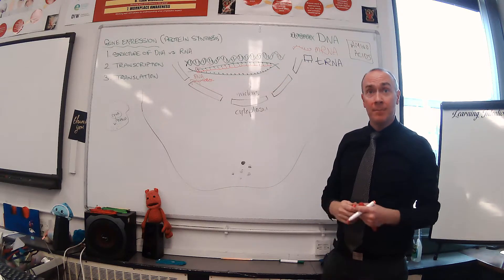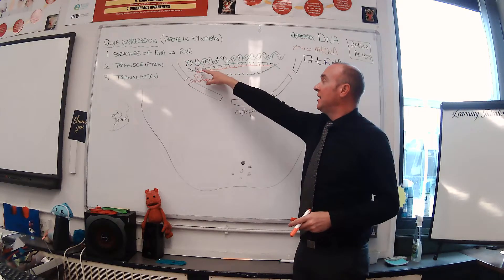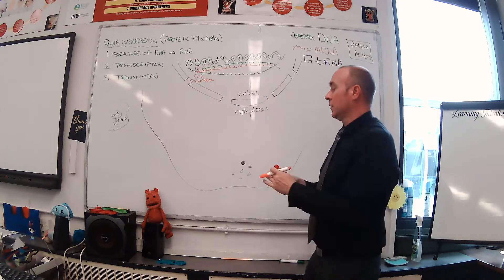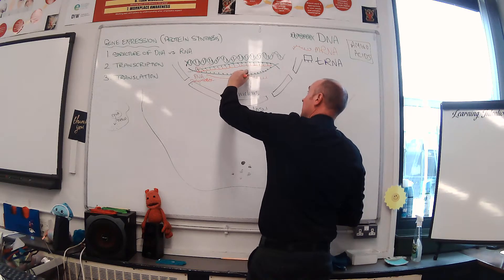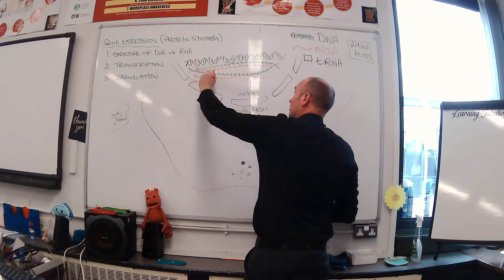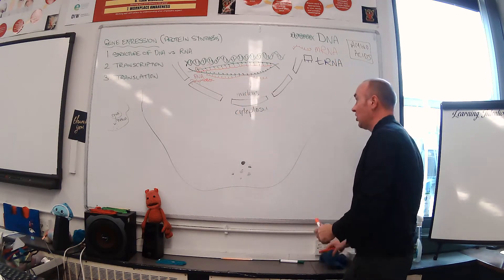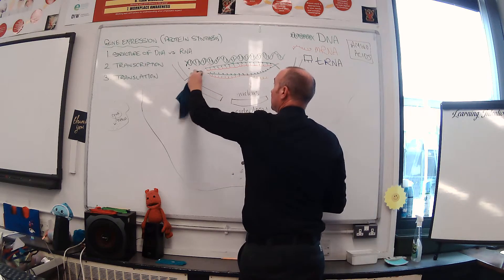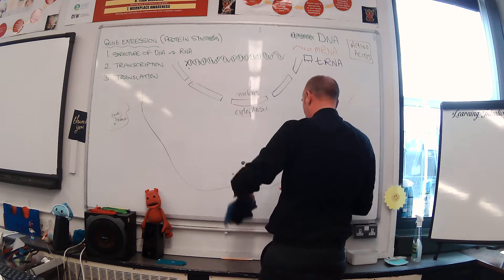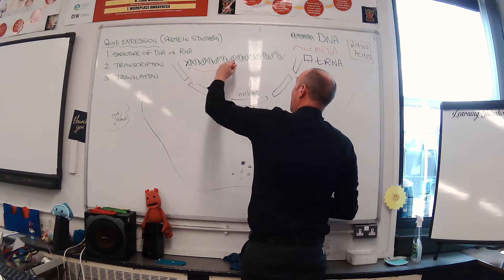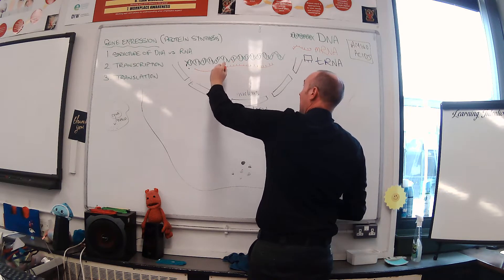By the time that RNA polymerase gets to the end of the gene, it will have produced a full strand of messenger RNA. The RNA will come off, it'll release, the hydrogen bonds will break, and then the DNA wraps itself back up, coils back up into its helix shape.